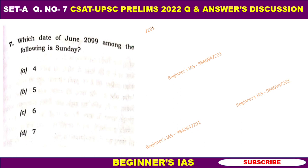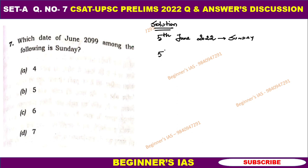To solve this kind of question, your presence of mind is very important. First of all, understand that you are present in that examination hall on 5th June 2022 — that is a Sunday. With this itself you can solve this question. Check what day 5th June 2099 falls on. The date is the same, the month is the same, so just do the yearly navigation.